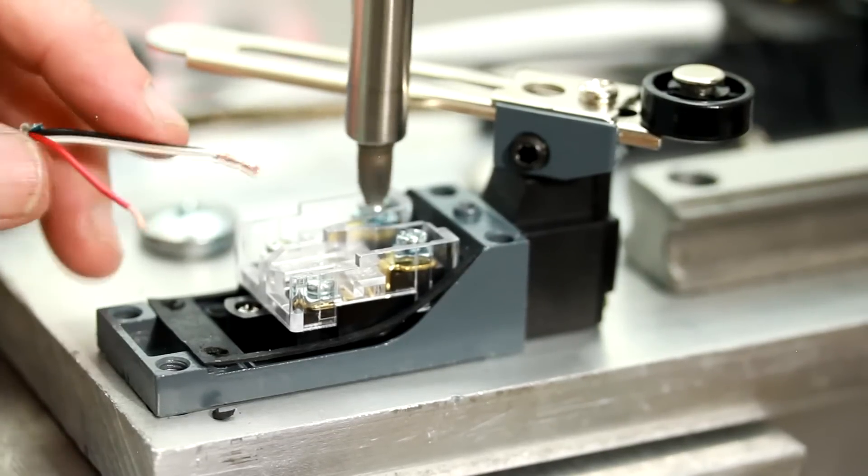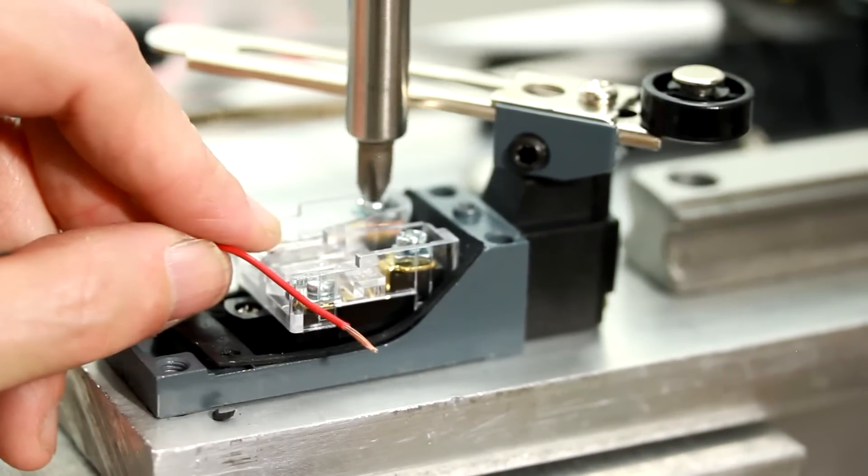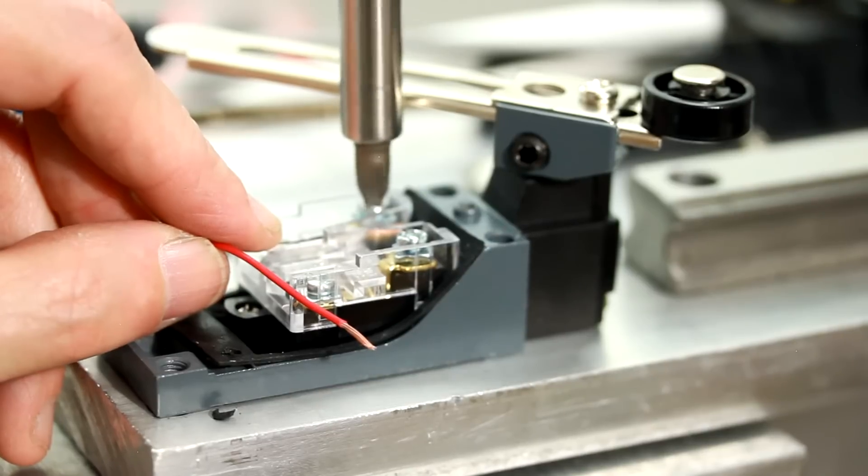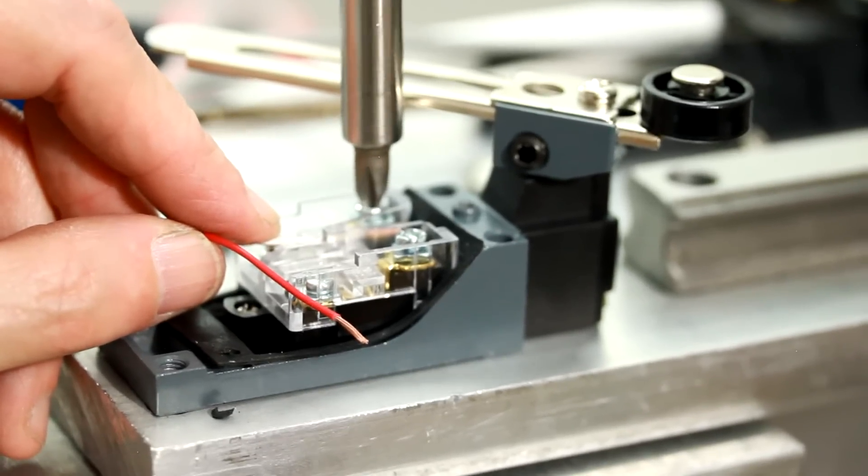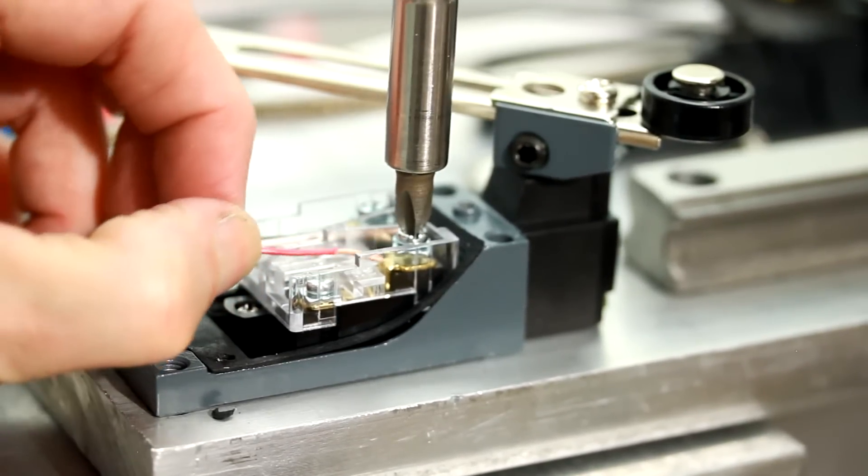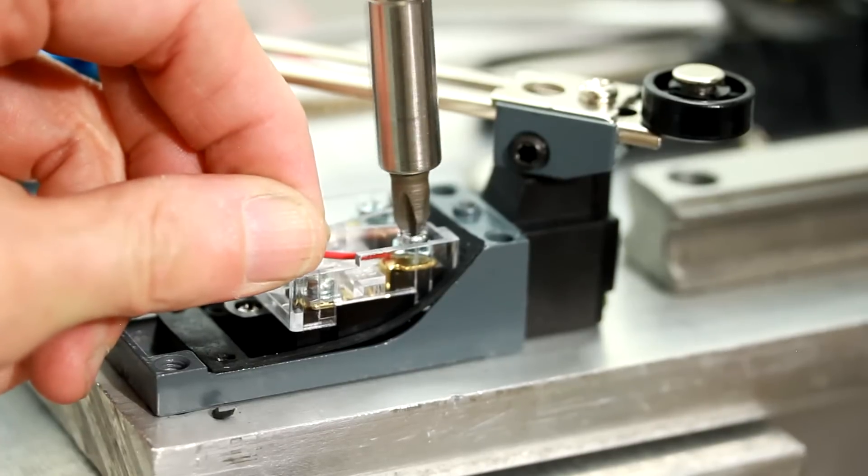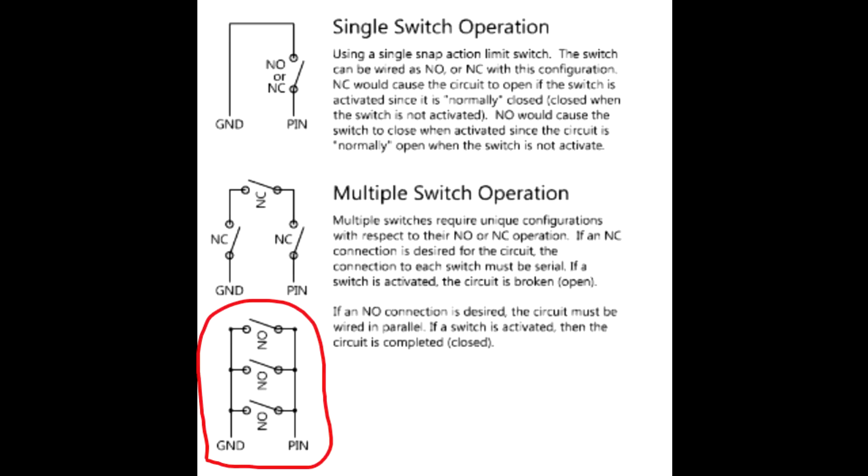You can connect as many switches as you wish in parallel to the input number 1 terminal of the Mach 3 USB controller. I'm connecting a second limit switch on the Y axis to demonstrate the connection that I'll be making to the input number 1.